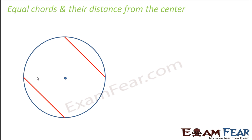For example, if there are two equal chords here for a given center — A, B and C, D — I want to know what is their distance from the center.